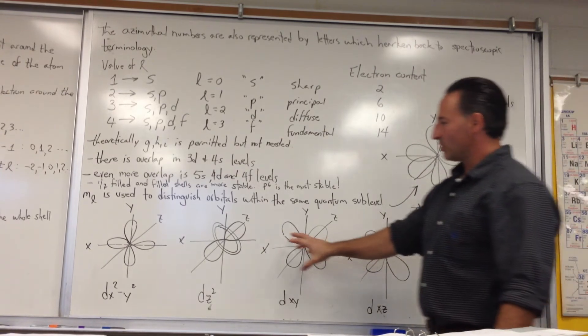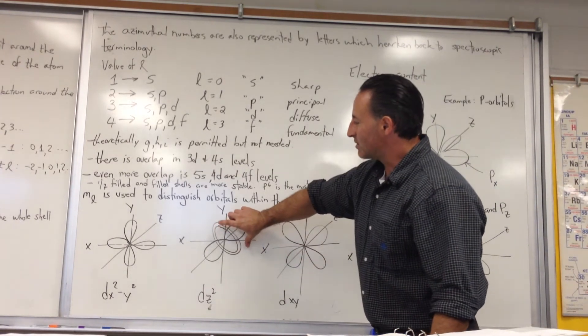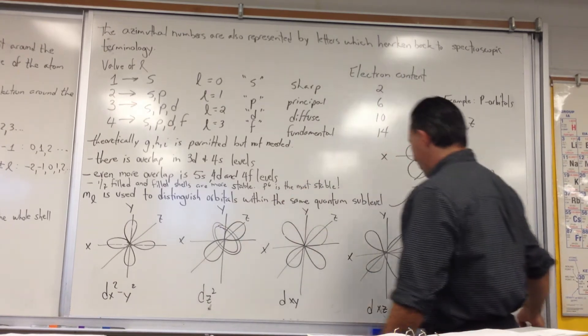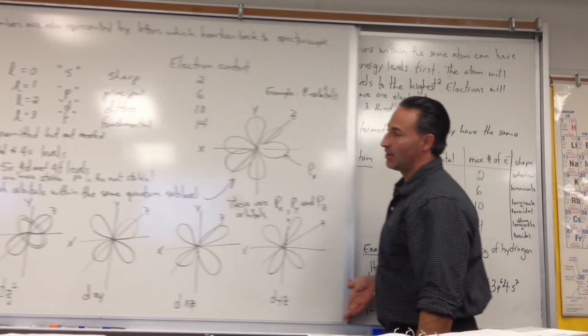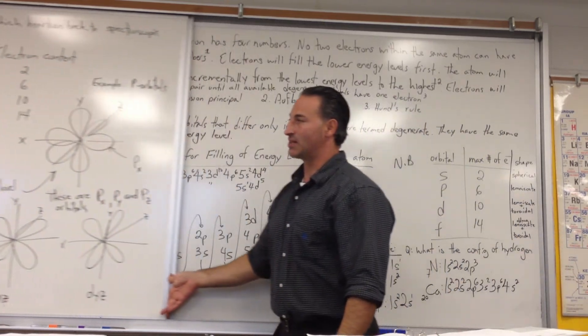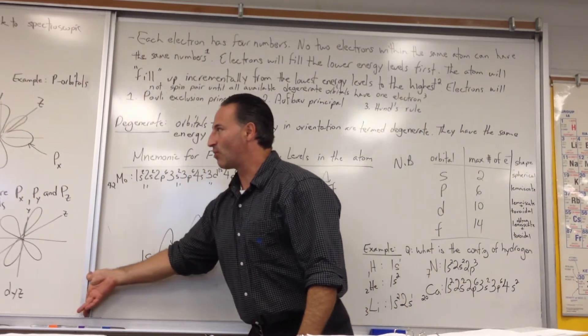Sometimes, like in the D orbitals, they lie in between the axes. The F orbitals are even more complicated to draw, so I didn't draw them. But there's seven different types, which means the F orbitals will hold up to 14 electrons.